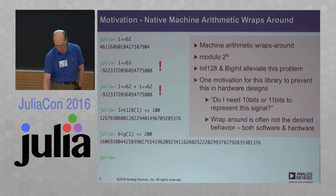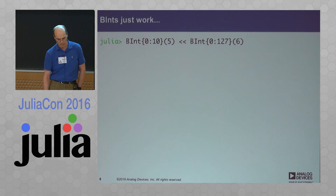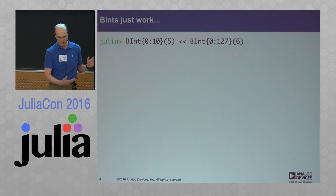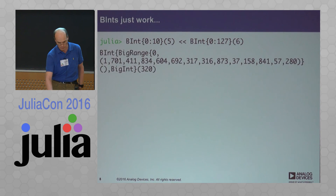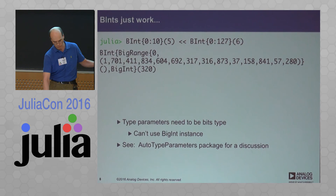You most often want to get the right answer. My motivation is to track and model digital systems and know the ranges, so I can answer questions like: do I need 10 bits or 11 bits? These bints just work. If I take a number between 0 and 10 with the value 5 and shift it up by a range of 0 to 127 — a 7-bit number, so this would be a huge shifter — 5 shifted up by 6 is a relatively small number, 320, but it potentially could be huge because it could be the number 10 shifted up by 127.